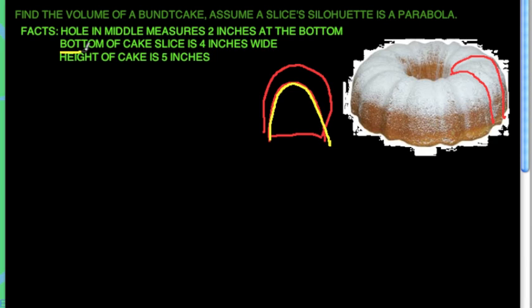The bottom of the cake slice is four inches wide, so that means this distance from here to here is four inches and the height is five inches. So that's from here to here. This is five inches.